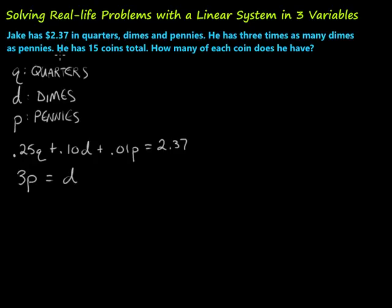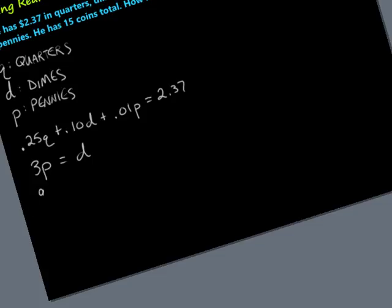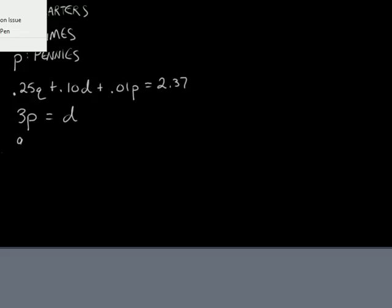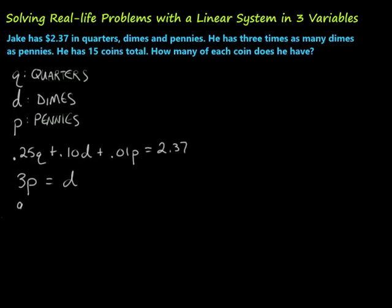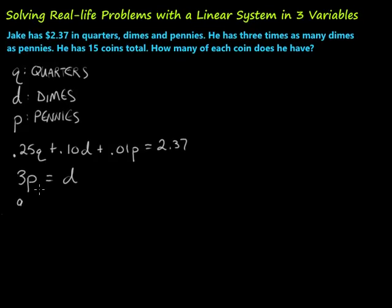One more piece of information here we have. It says he has 15 total coins. So that's just taking the number of each type of coin. If we have Q quarters and D dimes and P pennies, that would be Q plus D plus P equals our total number, which is 15.